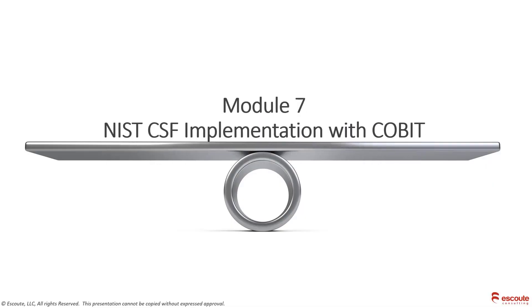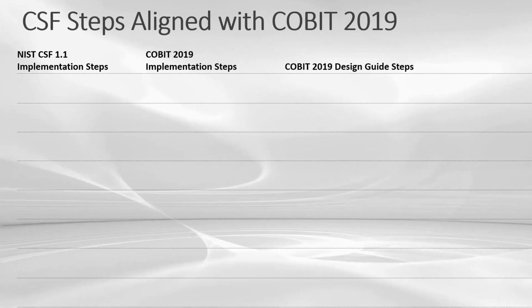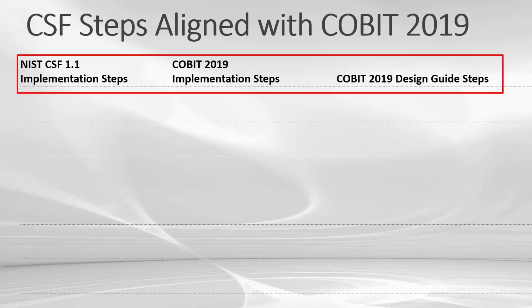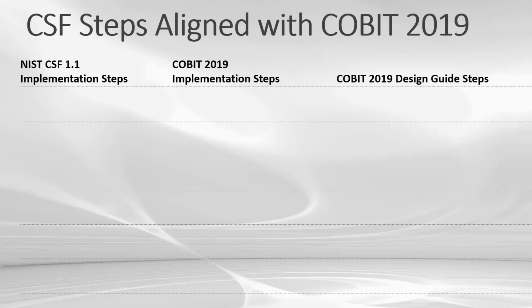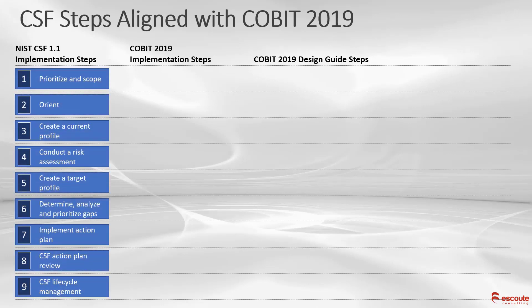This is the big module where we're now implementing the NIST CSF, but we want to leverage that with the COBIT framework. First, let's take a look at how these two frameworks line up with each other. On top here I have the NIST CSF 1.1 implementation steps. I'm going to compare that to the COBIT implementation steps. One additional thing I added here was the COBIT 2019 Design Guide steps. If you want to find out more information about the Design Guide and how that links to COBIT, go out and take a look at our COBIT Design Factors course out here on the e-learning site.